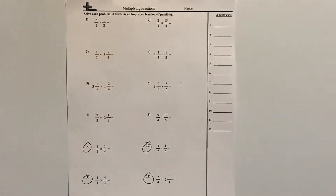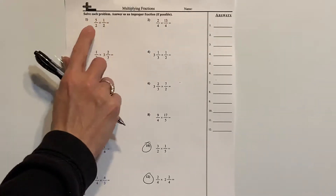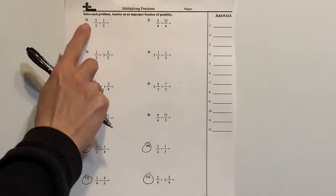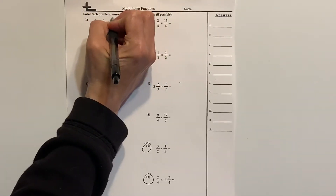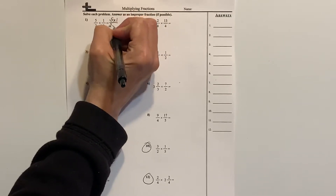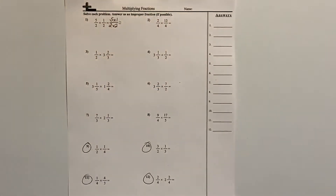Let's go ahead. We know a lot of things about multiplying fractions — we simply multiply the numerators and multiply the denominators. So if I were to rewrite this, I could rewrite this as 5 times 1 over 2 times 2, so then it looks more like what we're used to seeing with multiplication problems.